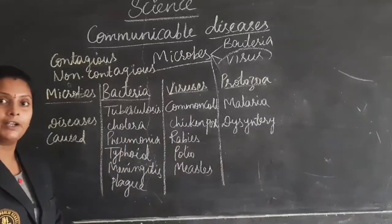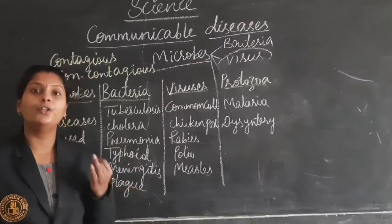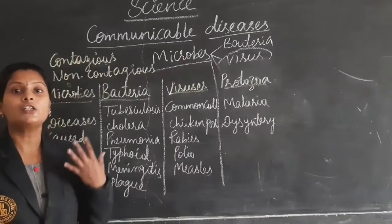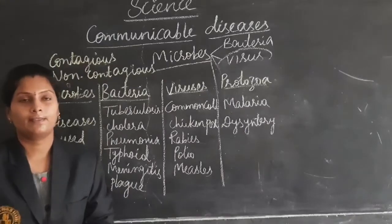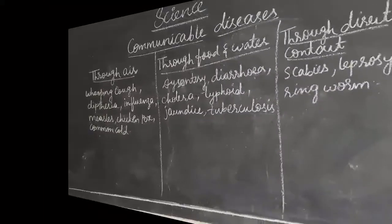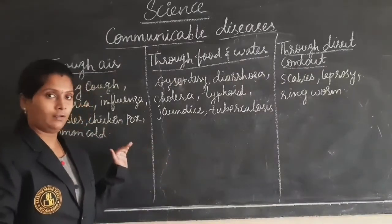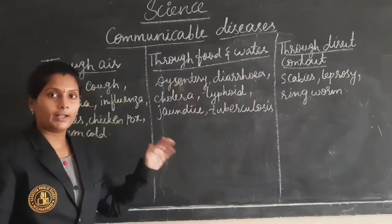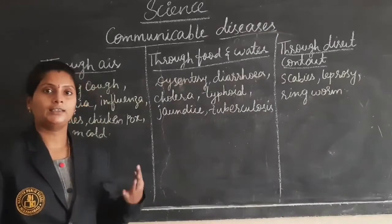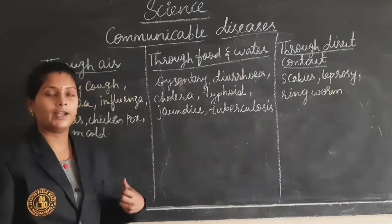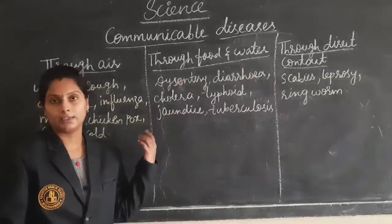All these diseases spread by different microorganisms can be spread through different ways: through air, through water and food, through direct contact, through insect bites. Contagious is nothing but person to person contact. If a disease spreads through person to person contact, it is a contagious disease. Through any other mode, we call it non-contagious. Here are the different types of modes through which diseases can be spread. First one is through air.